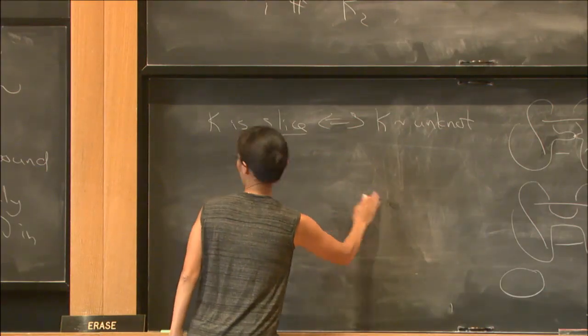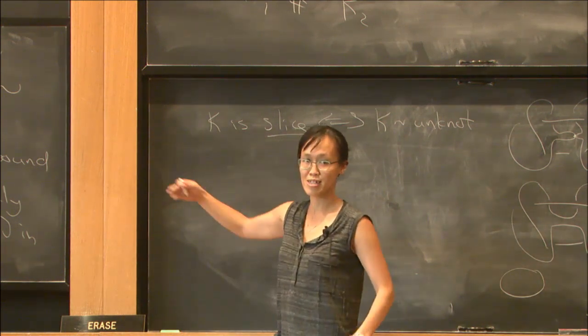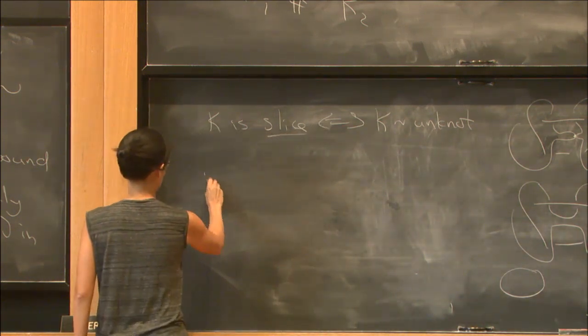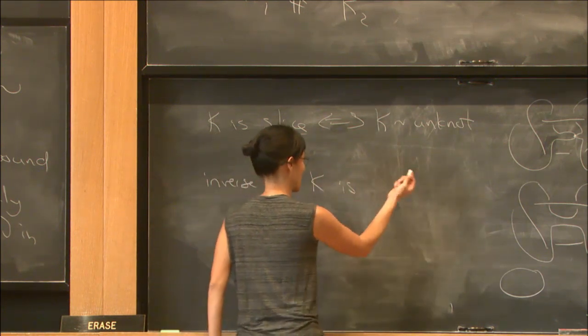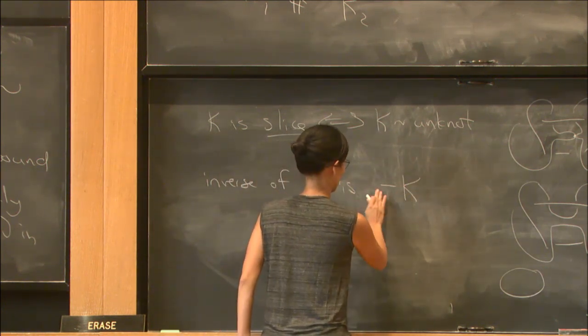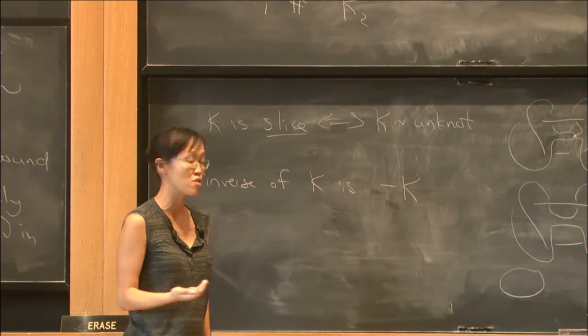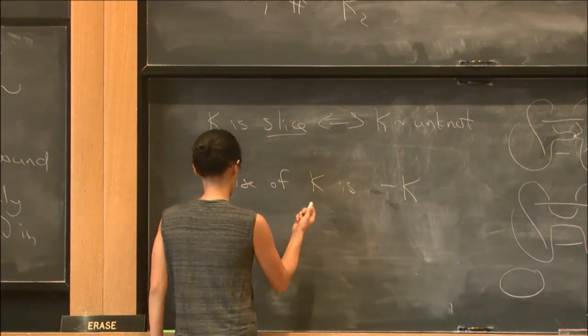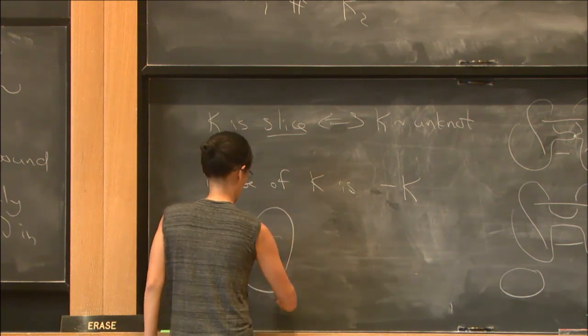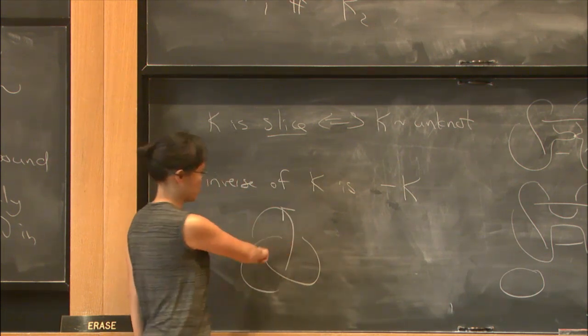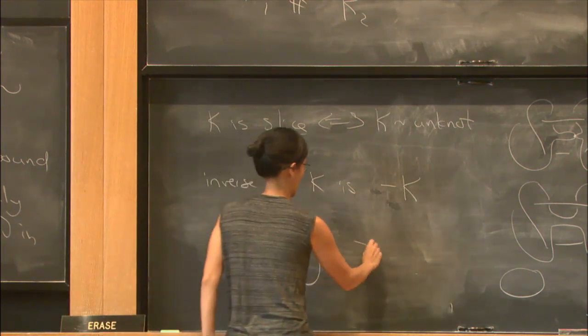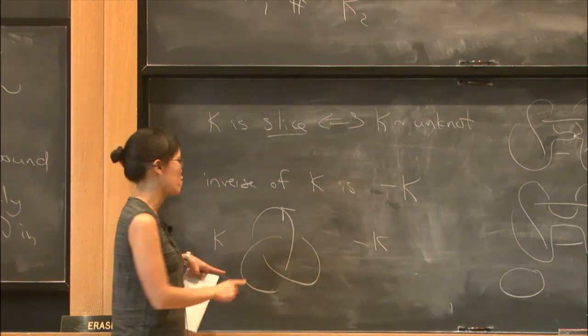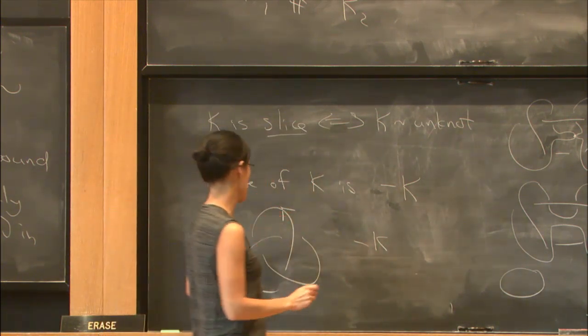It's not hard to say what the inverse of a knot is. First of all, this group is abelian, so it's sensible to call the inverse of K—it's denoted -K, and that's sensible. What is this? This is the reverse of the mirror image. So here is a knot; to get -K, you change all the crossings and you also reverse the direction of the arrow.